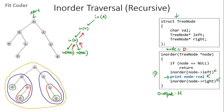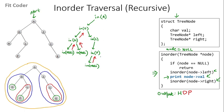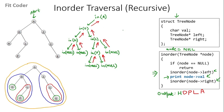Node value is now D, so we print D and call in-order for right of D, which is L. Node becomes L; we call left of L, which is P. Node is P — we call in-order for left of P, which is null, so we return. We print P, then call right of P which is also null, so we return. Processing of P is done. We go to L, print L, call right of L which is null, and return. Processing of L is also done. Left of A is fully processed, so we go back and print A. Then we call in-order for right of A.